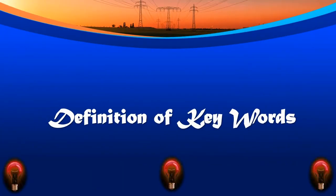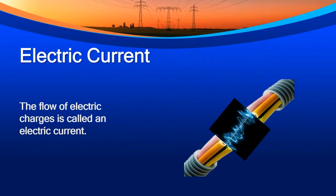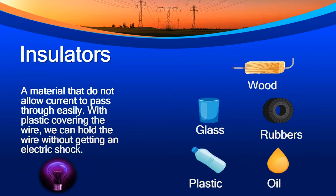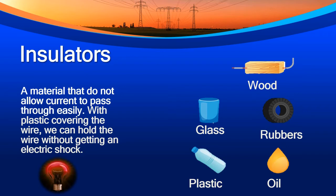Let us look at the definition of keywords. Electric current: the flow of electric charges is called an electric current. Insulators: a material that does not allow current to pass through easily. With plastic covering the wire, we can hold the wire without getting an electric shock. Here are some types of insulators: wood, glass, rubber, plastic, and oil.